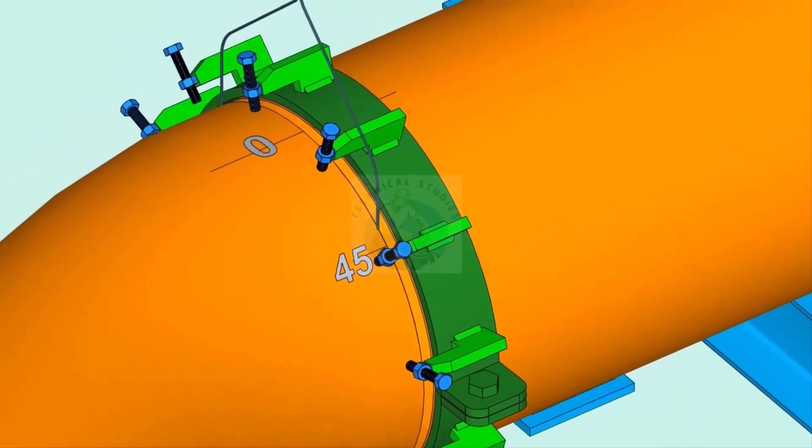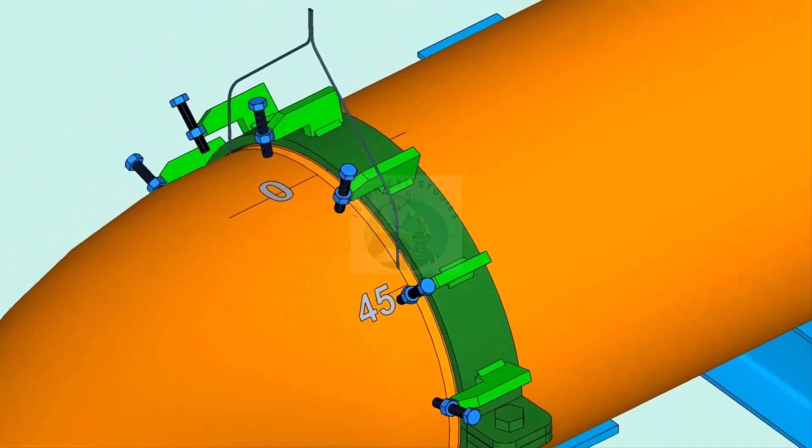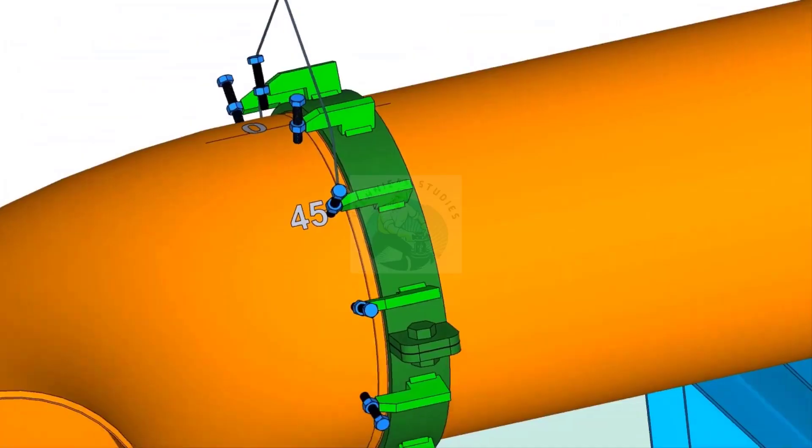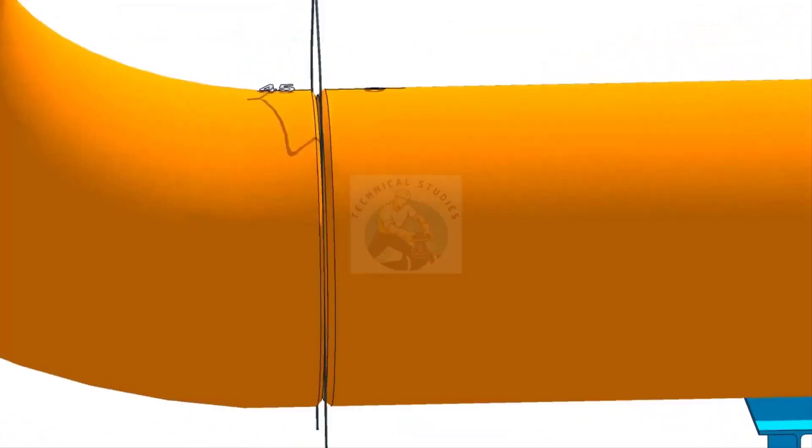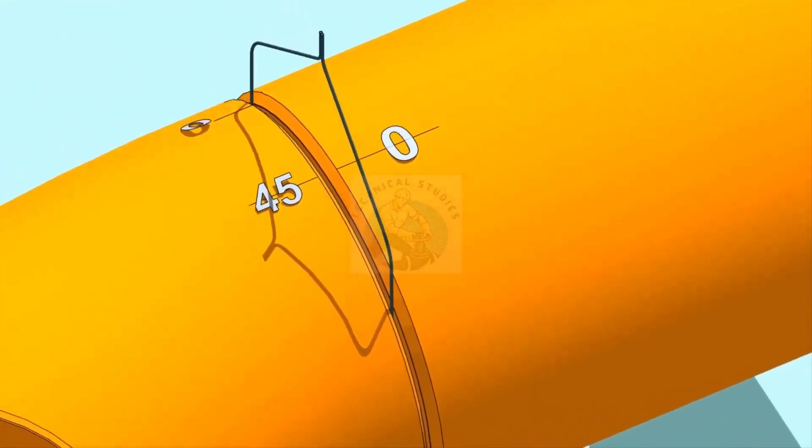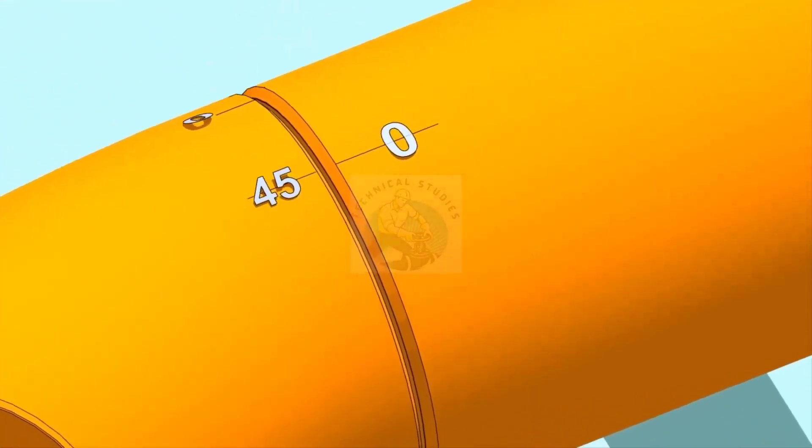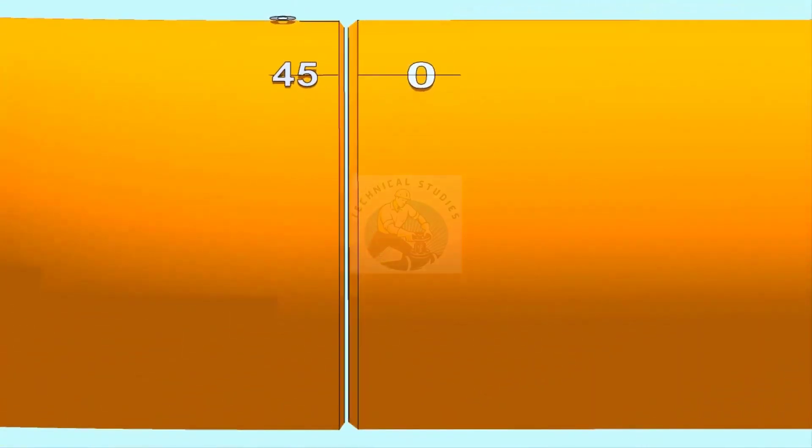Put the gap rod in the joint. Now slowly rotate the elbow until the 45 degree mark comes opposite to the 0 mark on the pipe. Make the joint gap equal all around the joint.